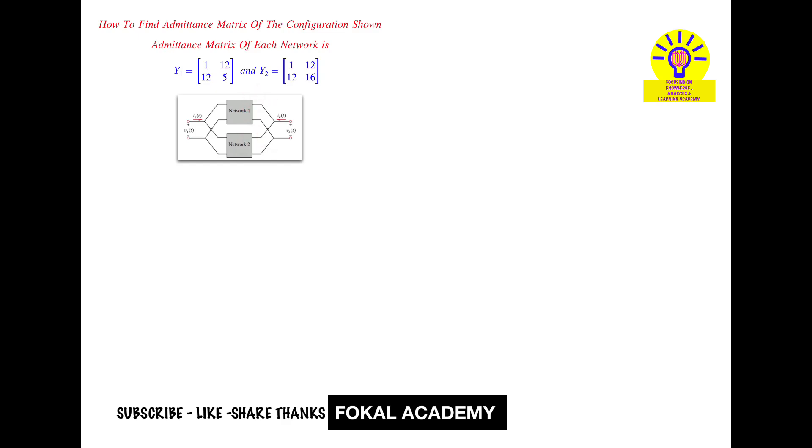The corresponding admittance matrices are given, that is y1 and y2. So y1 is 1, 2, 2, 5, and y2 is 1, 2, 2, 16. Now how can we find the overall admittance matrix for the networks shown here?